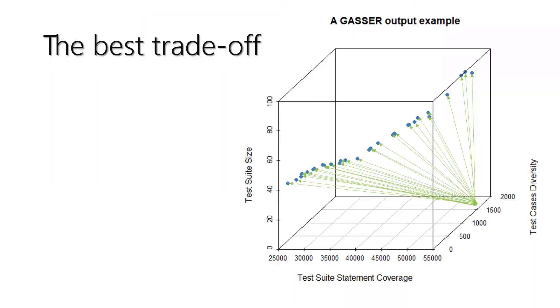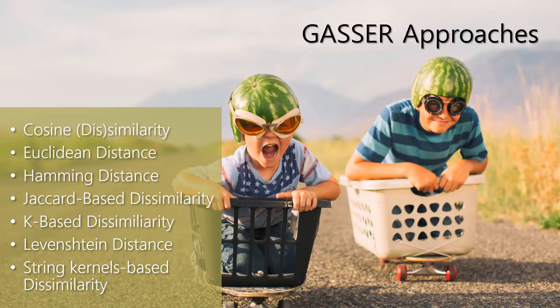We define seven instances of GASER, which differ from each other in the dissimilarity measure used to compute the test case statement diversity. This allows us to find, if it exists, the best GASER configuration.